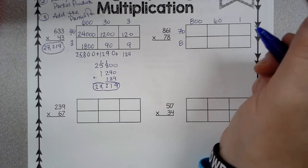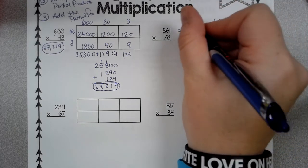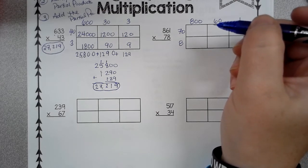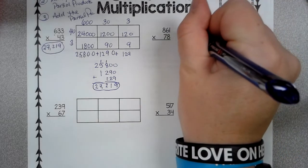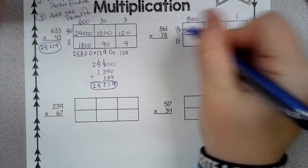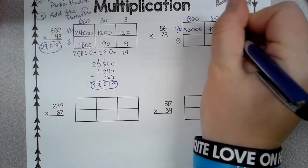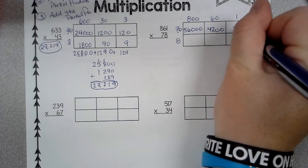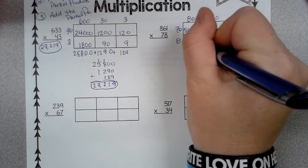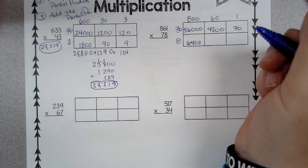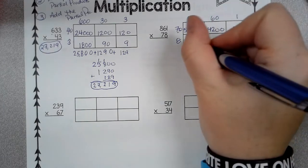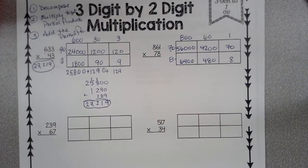So now all we have to do is multiply. 7 times 8, now believe it or not, 7 times 8 is the most missed multiplication fact out there, at least that's what I've read, is 56. So 56, and I have 1, 2, 3 zeros. 7 times 6 is 42 with 1, 2 zeros. And 70 times 1. 8 times 8 is 64 with 2 zeros. 8 times 6 is 48 with 1, 0. 8 times 1 is 8. I like those little bitty ones.